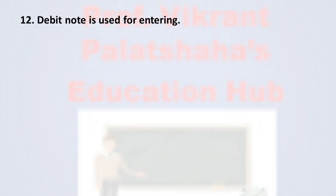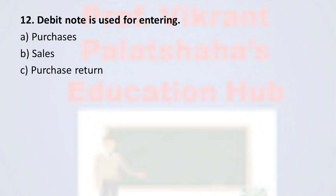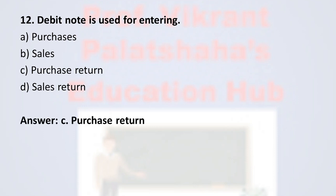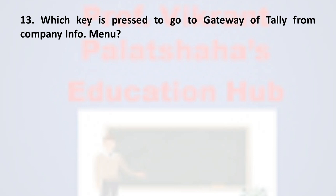Question number twelve: Debit note is used for entering — Option A: Purchases, Option B: Sales, Option C: Purchase Return, Option D: Sales Return. The correct option is Option C, Purchase Return. A debit note is prepared for purchase return.